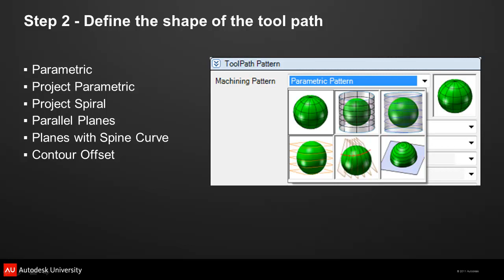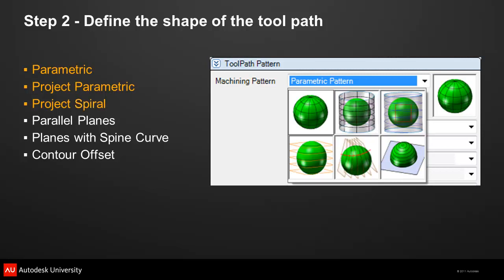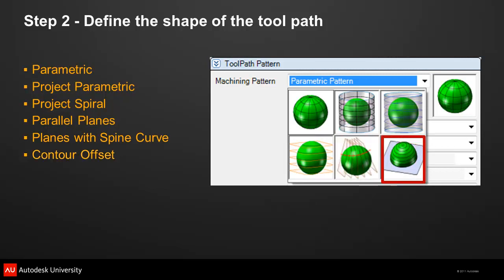Now that the area to machine is defined, the next step is to decide what the toolpath will look like on that area. The composite function includes six types of machining patterns common to multi-axis machining: a standard parametric pattern that takes its shape from the flow lines of the model itself, a projected parametric pattern that projects flow lines of a separate surface onto the model, a spiral pattern projected onto the model for a continuous uninterrupted cut, two types of planar machining — one following a straight path and another following a curved path — and finally an offset pattern that takes its shape from the boundary of the area to machine.